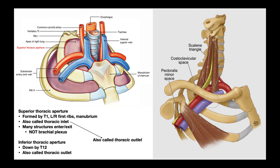The third space is the pectoralis minor space. All three structures — the brachial plexus (now more terminal branches, actual named nerves), the axillary artery, and the axillary vein — pass under the proximal, more tendinous part of the pectoralis minor muscle. Once they pass underneath that tendon, they enter the axilla and move through the upper extremity.